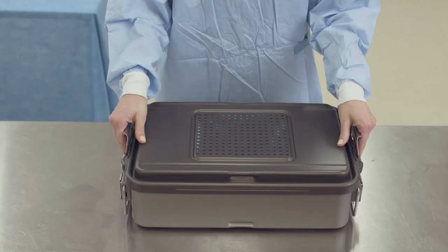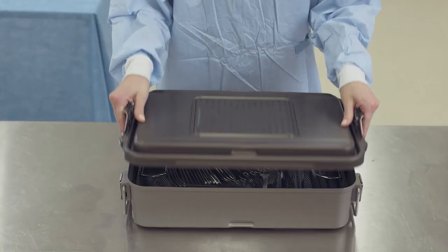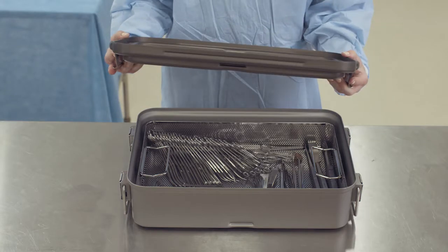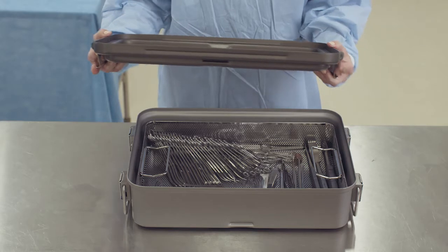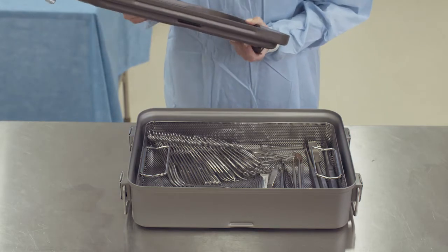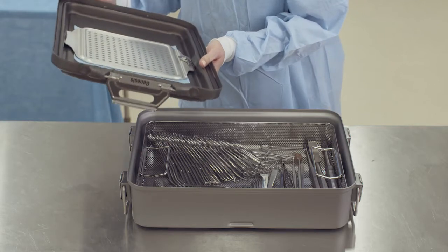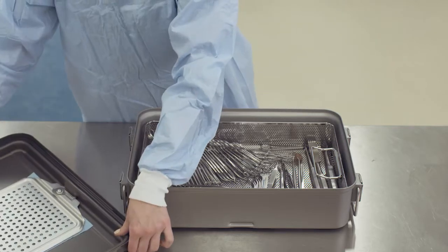Lift the lid vertically up and off the container bottom. After removing, inspect the lid. Check the gasket to ensure there is no damage or separation from the retaining groove. Inspect the filter and retention plate in the lid for correct placement. Inspect the filter for any visible tears or punctures.